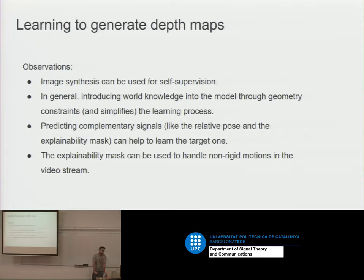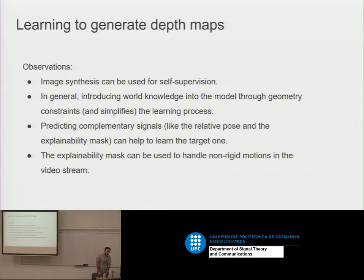Some observations: synthesizing novel views is super useful for doing self-supervision. If you don't have data, think about how you would synthesize the input and then compute the loss. The explainability mask is a trick that can be used for other tasks — for example, if you are using image segmentation on videos, you will have the same kind of occlusions and you can use these kinds of signals.